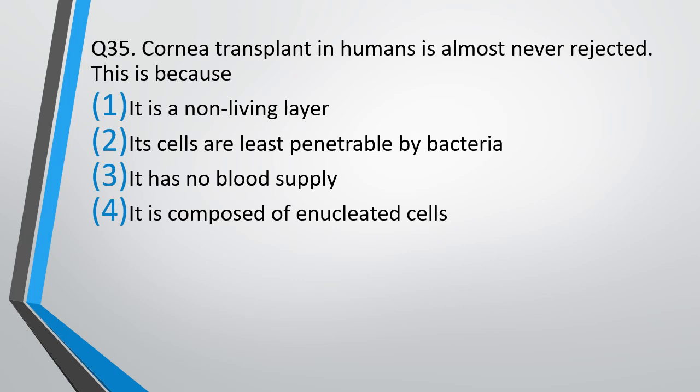The cells are least penetrable by bacteria. It has no blood supply. It is composed of enucleated cells. Why is cornea transplant almost never rejected? The correct answer is option 3 — because it has no blood supply. For rejection, there has to be blood supply through which the cells can come. Since it has no blood supply, no cells would come and no rejection is seen.